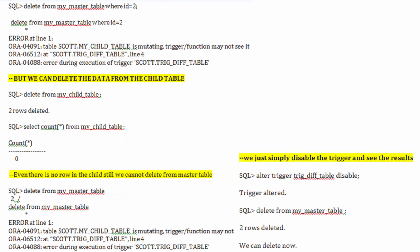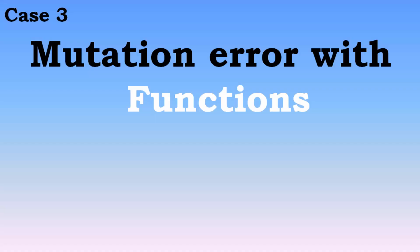Whenever we try to perform any insert, update, or delete operation on the same table that a trigger refers to and tries to access data from, we get a mutation error. Let's now understand mutation error with functions — mutation error can also occur with functions, not just triggers.